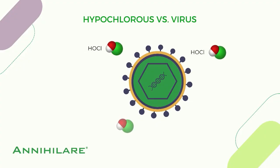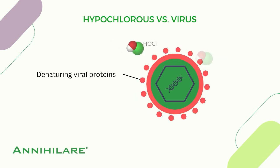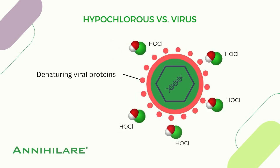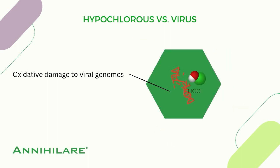Hypochlorous acid, on the other hand, works in various ways: by damaging viral envelopes, denaturing viral proteins, disrupting the protein capsids, and causing oxidative damage to viral genomes.